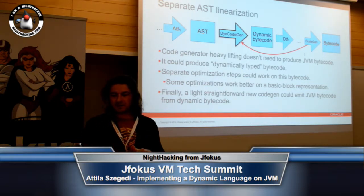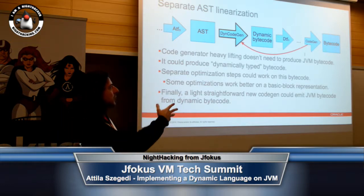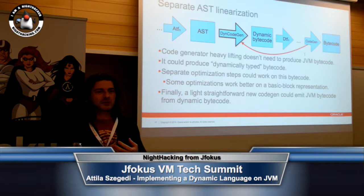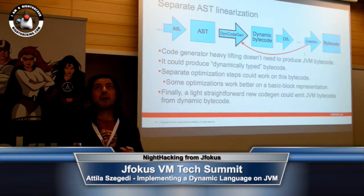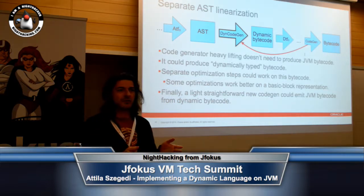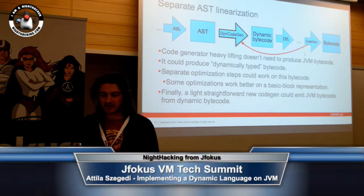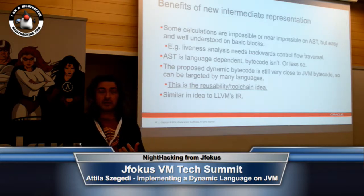We could have a bunch of optimization steps on this bytecode, like honest-to-goodness liveness analysis, anything that you need backwards control flow for performing. And then code gen would just become a very straightforward dynamic bytecode to ordinary Java bytecode translator. However, for that we would actually need this new intermediate representation. JRuby 9000 obviously already beat us to proving the point, because JRuby 9000 does have an IR representation now, and they're pretty happy with it — they can do their liveness analysis and everything else.